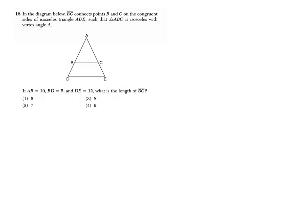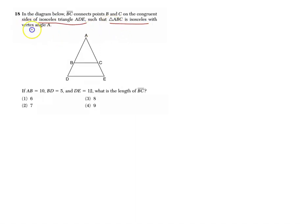Let's just go through this problem together and solve it. In the diagram below, BC connects points B and C on the congruent sides of isosceles triangle ADE such that triangle ABC is isosceles with vertex angle A.